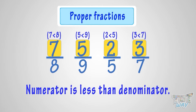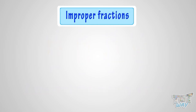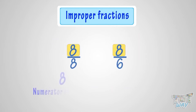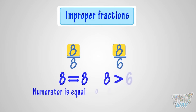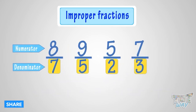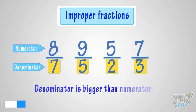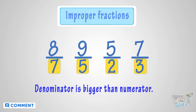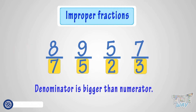Now let's learn what are improper fractions. A fraction where the numerator is bigger than the denominator is called an improper fraction. Here the denominator is bigger than the numerator, so it's an improper fraction. All these are examples of improper fractions.